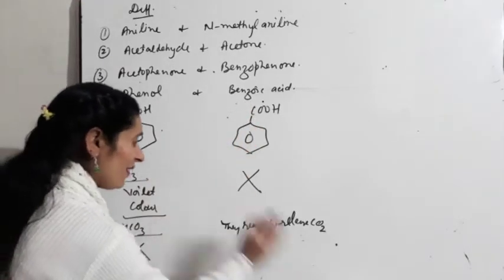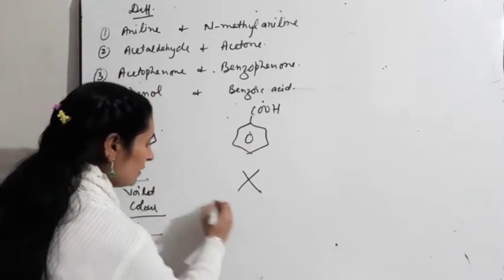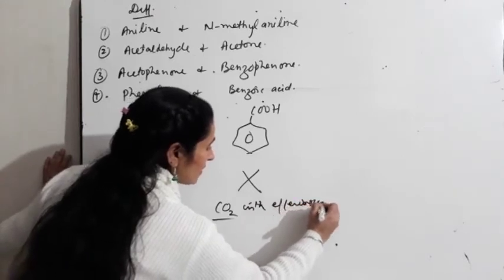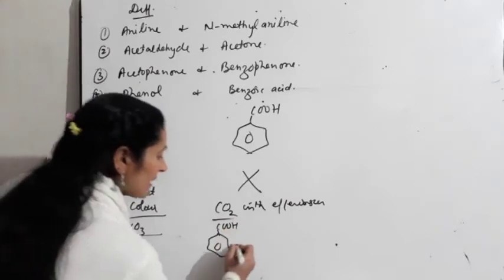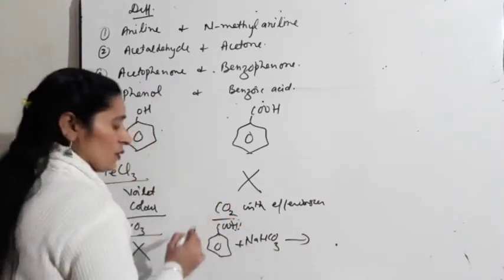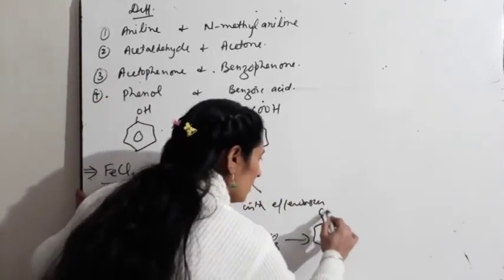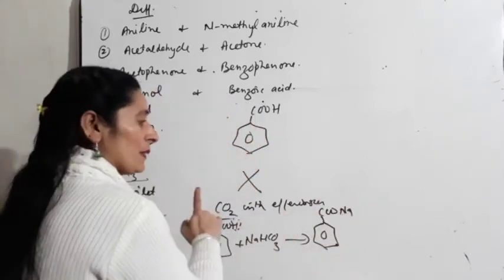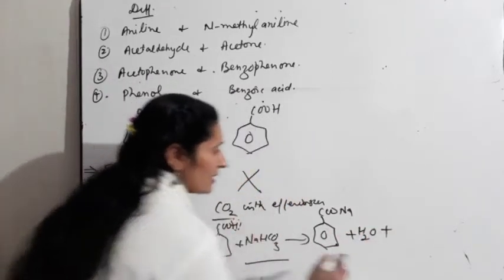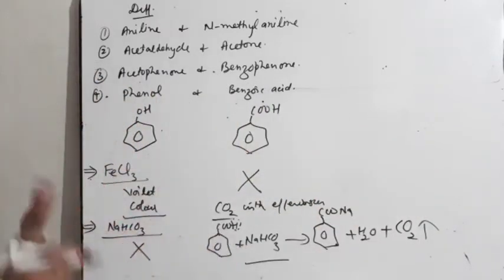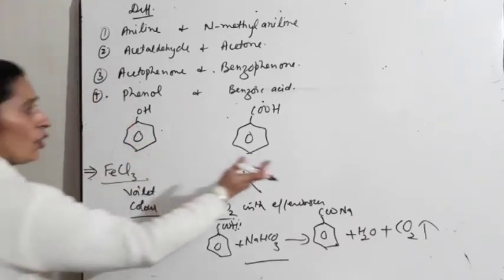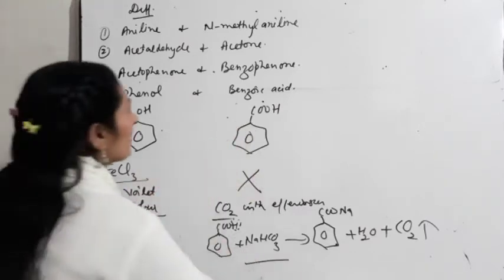Lekin carboxylic acids react with sodium bicarbonate and release carbon dioxide with effervescence — sound ke saath. Yeh raha hamara benzoic acid: ismein add kiya sodium bicarbonate — yahan se nikla H+, aur yeh ban gaya sodium benzoate — sodium ka salt. Acid plus base equal to salt and water — toh water bhi nikla, lekin yahan se carbon dioxide bhi release hui jiski sound se hamein pata chal jata hai that it is having carboxylic acid group. Toh yeh do test hamein batate hain: phenol color test (FeCl3) aur carboxylic acid with NaHCO3 effervescence.